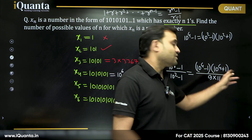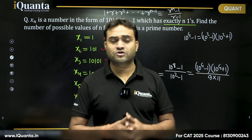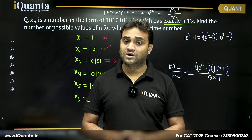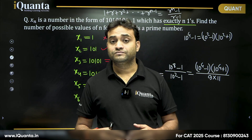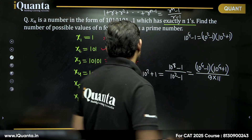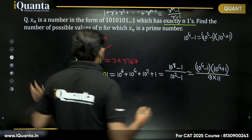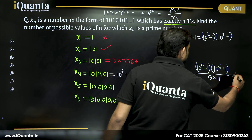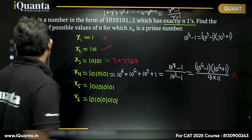So this number will be at least the product of 2 natural numbers each greater than 1. Therefore, this will not be a prime number.